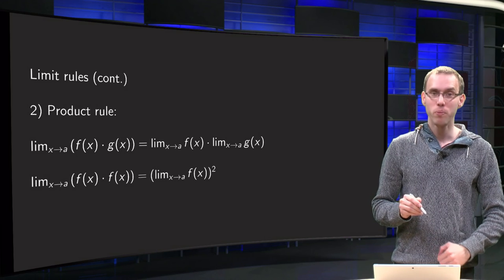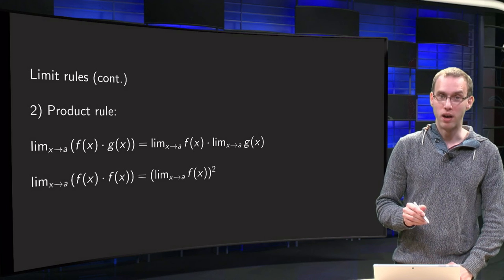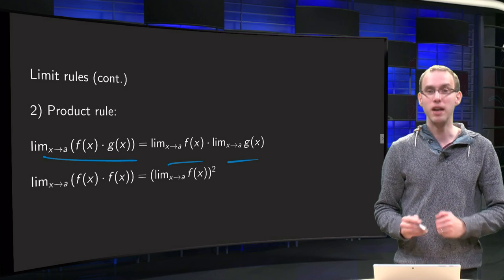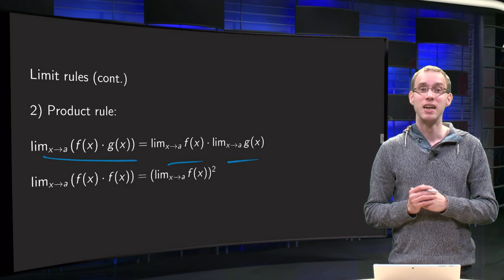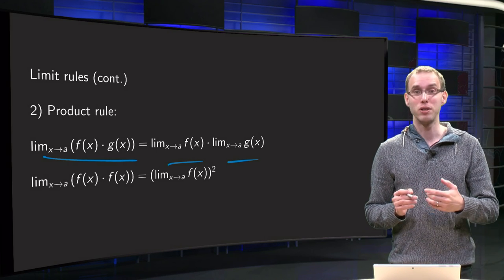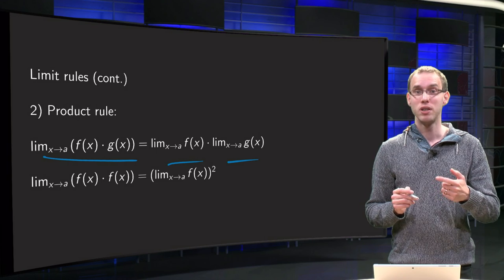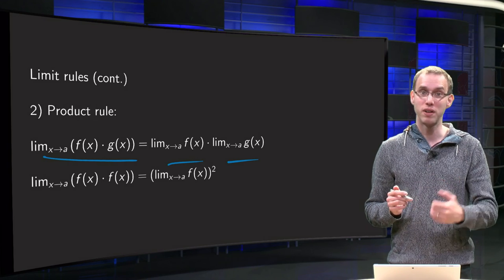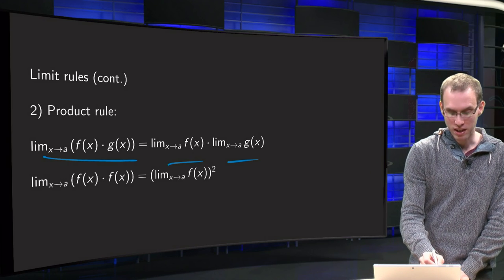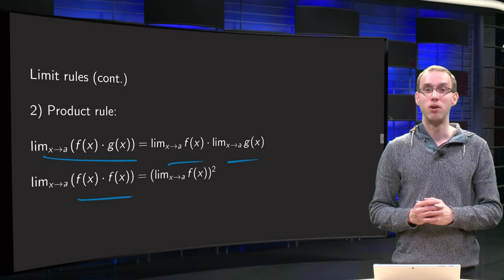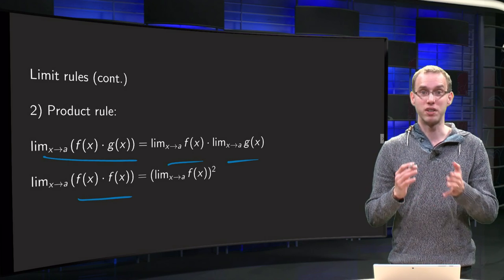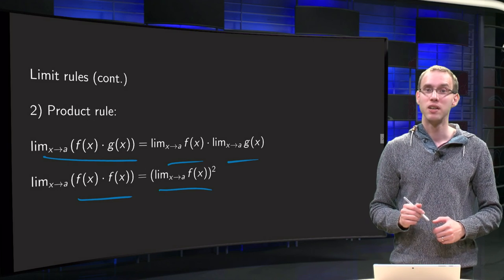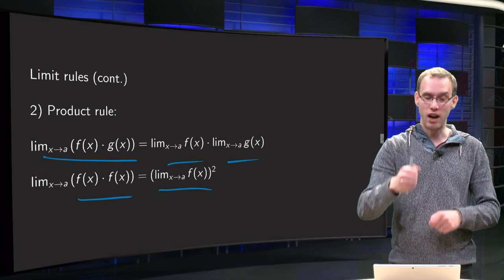We have the product rule — the limit of a product is the product of the limits, if both exist. You can apply this by setting g(x) equal to f(x), and then we get the limit of f(x) times f(x) equals the limit of f(x) squared. So we can basically take the square out.